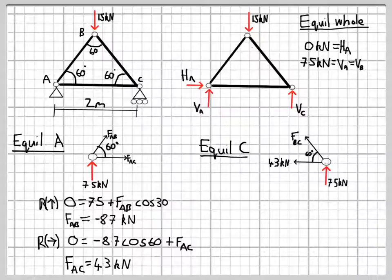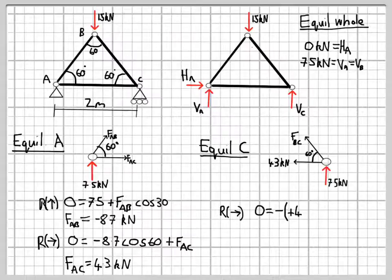The external force is 7.5 kN acting upwards. The force in member AC we now know is 4.3 kN, and we've just got the force in BC to establish. So we resolve forces horizontally.